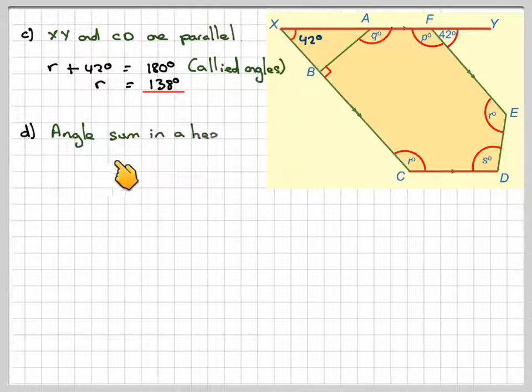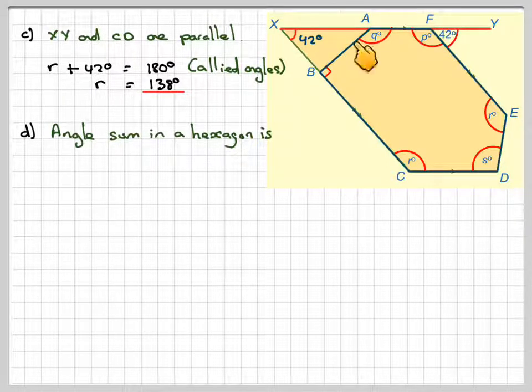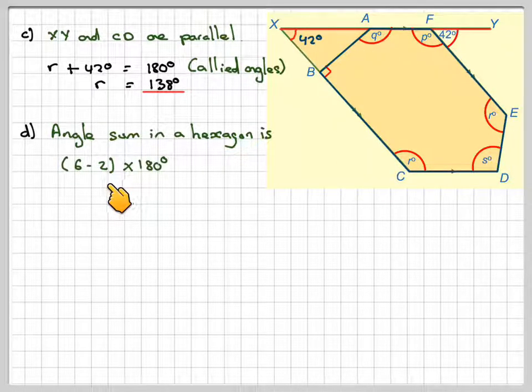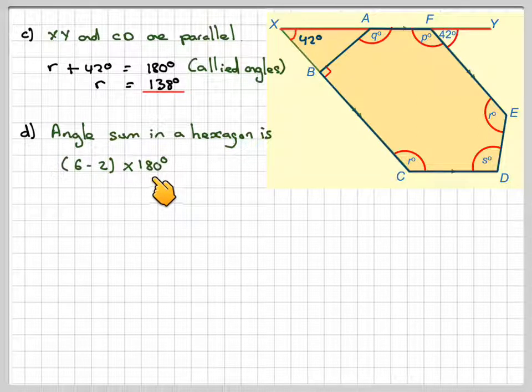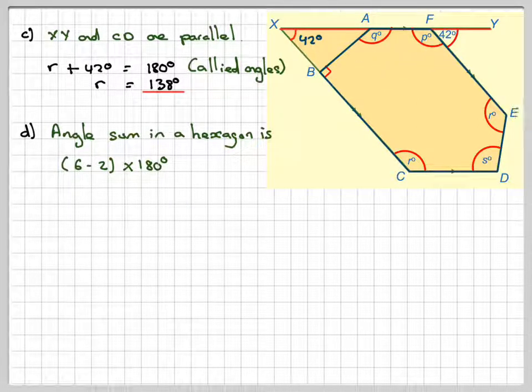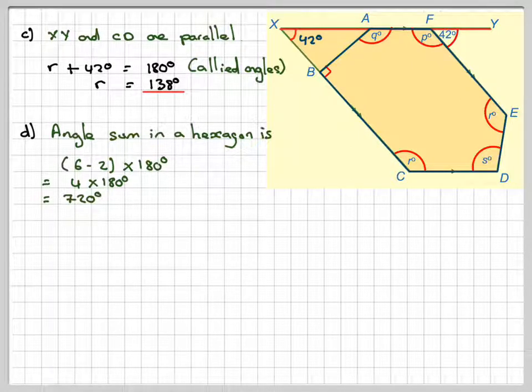The angle sum in a hexagon is going to be 6 minus 2 times 180. Six minus 2 because there's always two less triangles than the number of sides in any polygon. That gives me 4 times 180, which is 720. So all these angles must add up to 720.